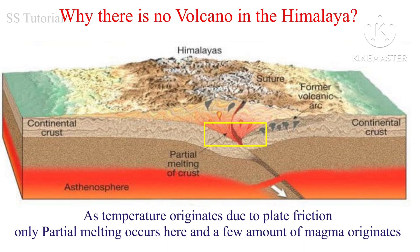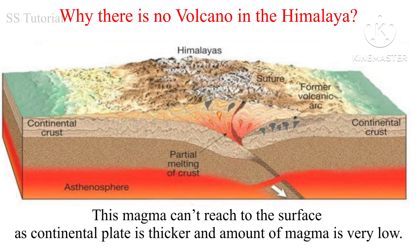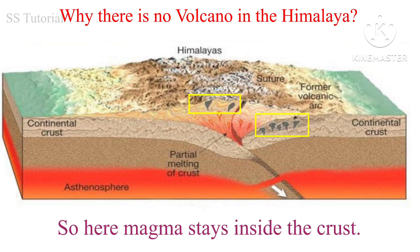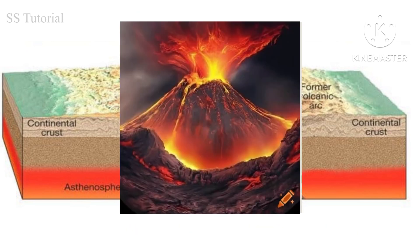That is why plate melting does not occur significantly and magma does not originate here in large amounts. Due to the temperature generated by plate collision, some partial melting occurs and a small amount of magma originates, but the amount is very low. This magma cannot reach the surface, because the Himalayas formed from two continental plates that are each 50 to 70 kilometers thick — the magma cannot penetrate these two thick continental plates and stays in the crust. That is why, even though the tectonic plates are active, there is no volcano in the Himalayan mountain.